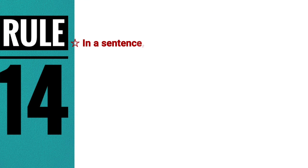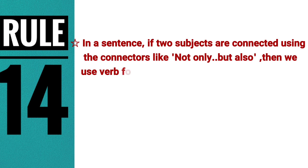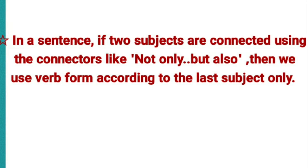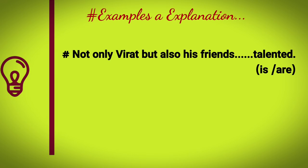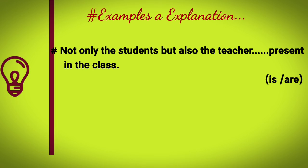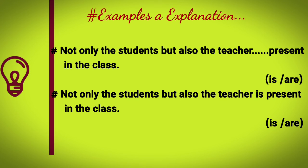The fourteenth rule: when two subjects are connected using 'not only...but also,' the verb agrees with the last subject. For example: 'Not only Virat but also his friends are talented' — verb agrees with 'friends' which is plural. 'Not only the students but also the teacher is present in the class' — verb agrees with 'the teacher' which is singular.